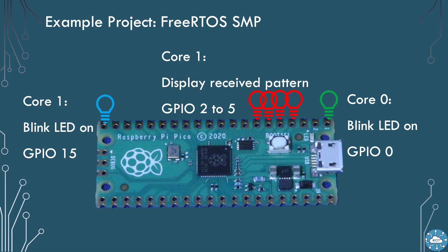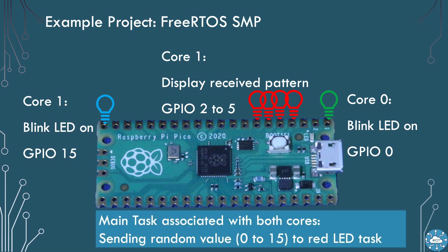We'll fix this counter agent task to core 1. And finally, we'll generate a random number and send this to our counter display agent, which is on core 1. This main task we will allow to switch from core 0 to core 1 under the scheduler's control.